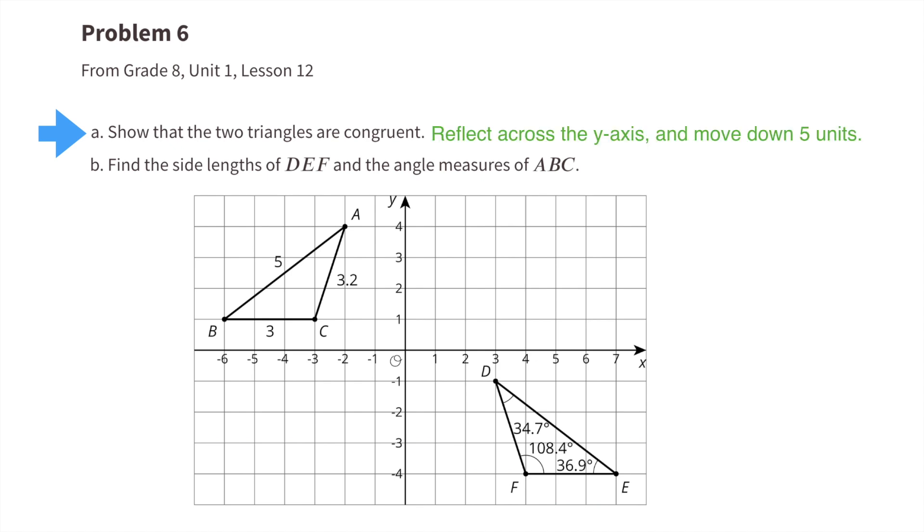Number six, part a: show that the two triangles are congruent. You would reflect across the y-axis and move down five units.